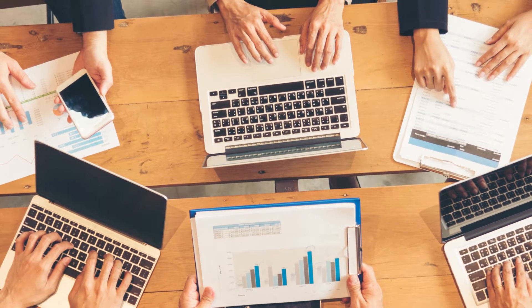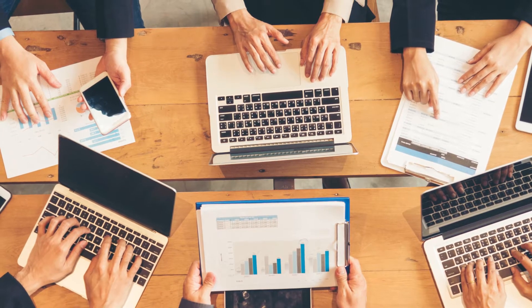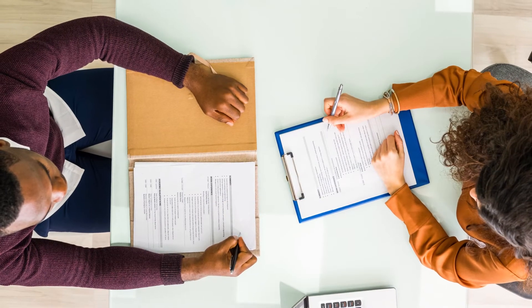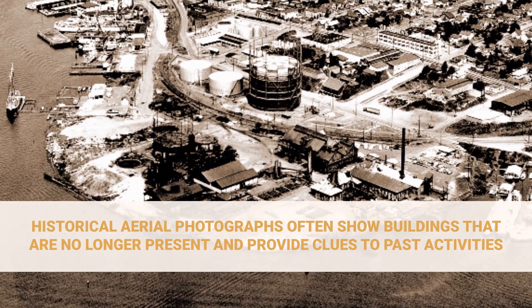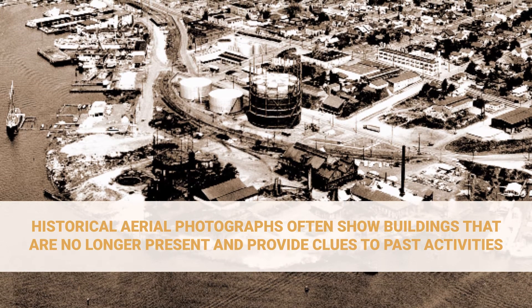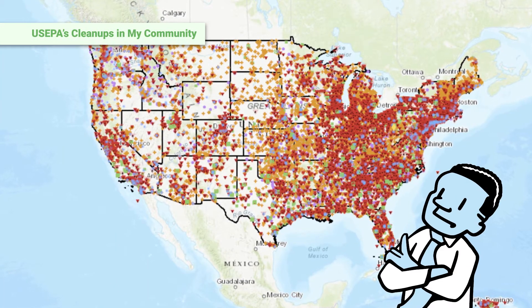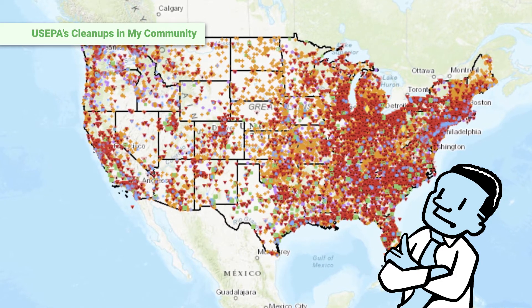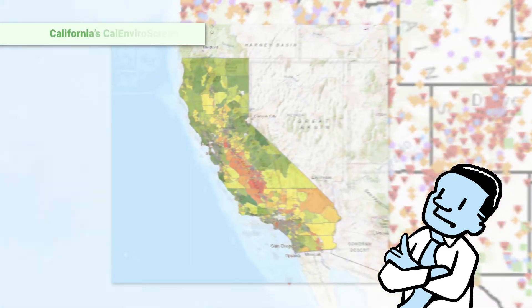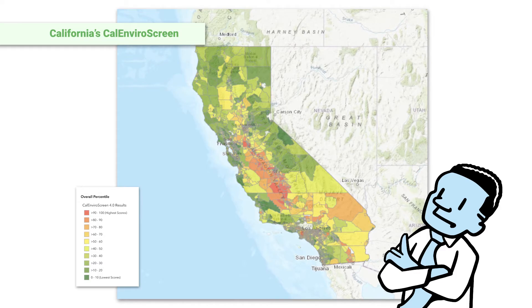It's a good idea to research possible background locations before choosing the best one. Knowledge of past and present activities at and around the site and potential background areas will help with your final decision. Conduct interviews with workers around the area to see what they know. Historical aerial photographs often show buildings that are no longer present and provide clues to past activities. Other helpful resources include geological maps, vegetation maps, and soil maps. You may be able to compare your chosen locations with databases of soil concentrations already available, such as US EPA's Cleanups in My Community and California's CalEnviroScreen.